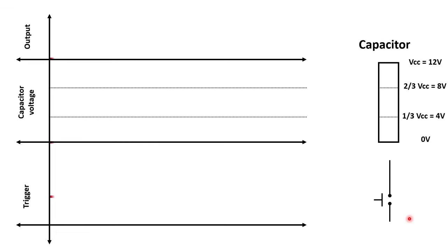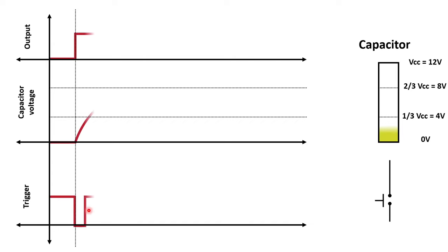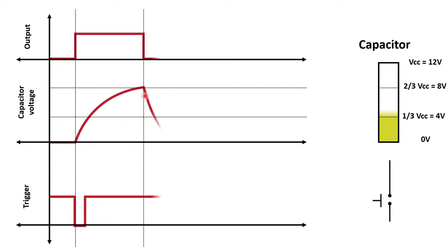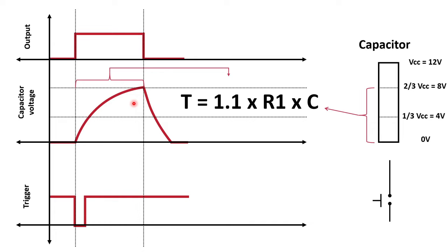The monostable multivibrator has only one stable state, which is why it is named monostable. When a trigger signal is applied, it goes into an unstable state, which lasts until the capacitor reaches two-thirds Vcc voltage. Then it returns to its original state. The time the output remains high is determined by the time to charge the capacitor to 2/3 Vcc, which depends on R1 and C. The formula is: T = 1.1 × R1 × C.